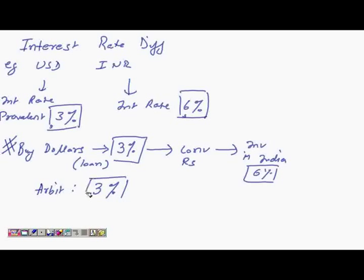Now the interest rate differential theory says that if the spot rate and the future rate are same—say for example if today's spot rate is 45 and even after one year the future rate would be 45—then this differential is there in the market and you can easily cash in on it.